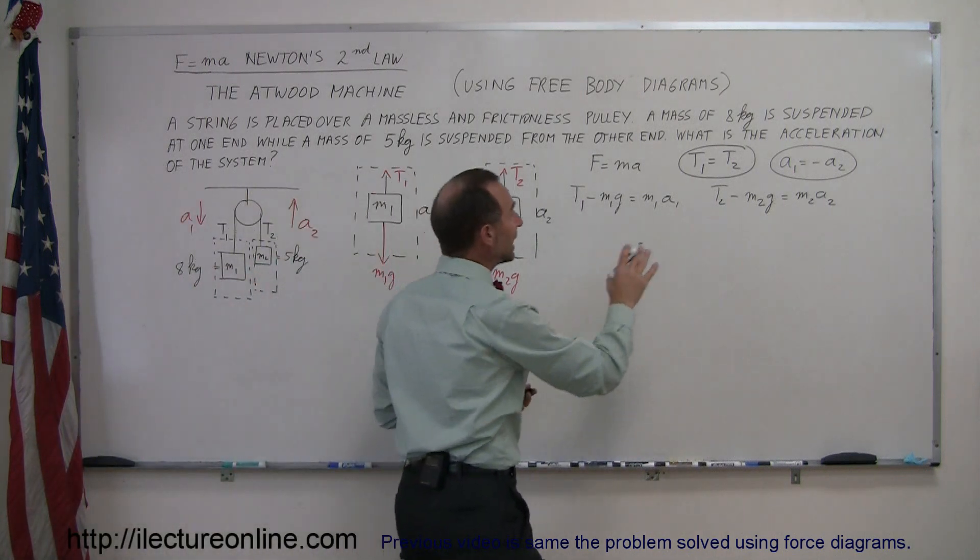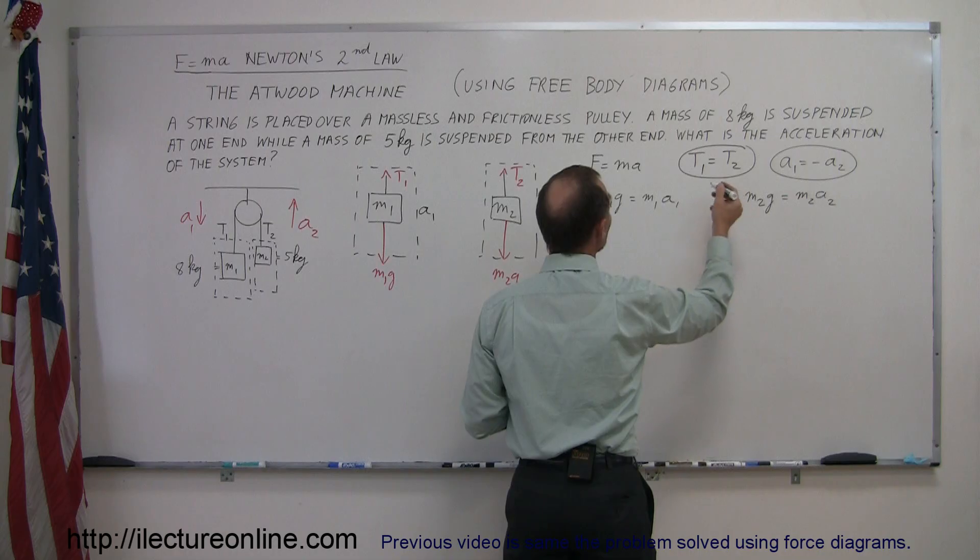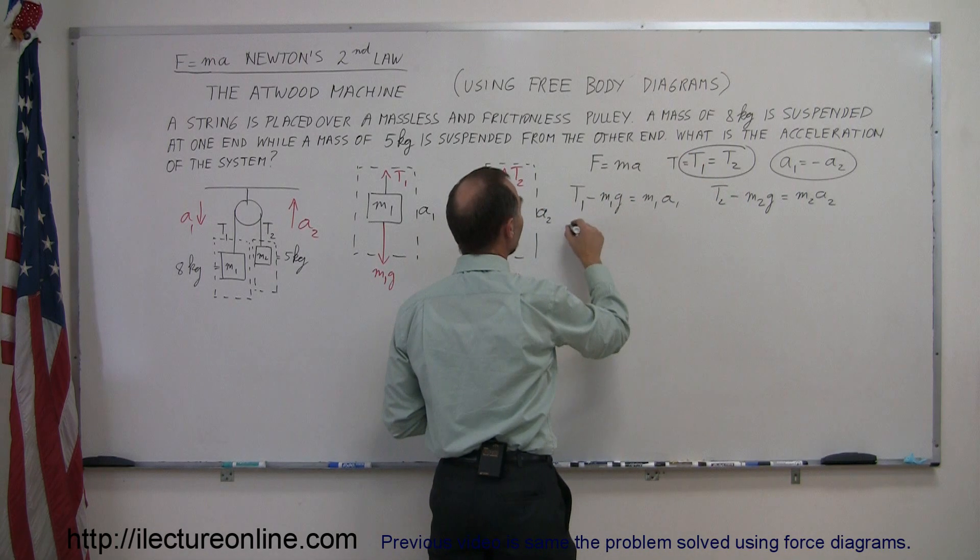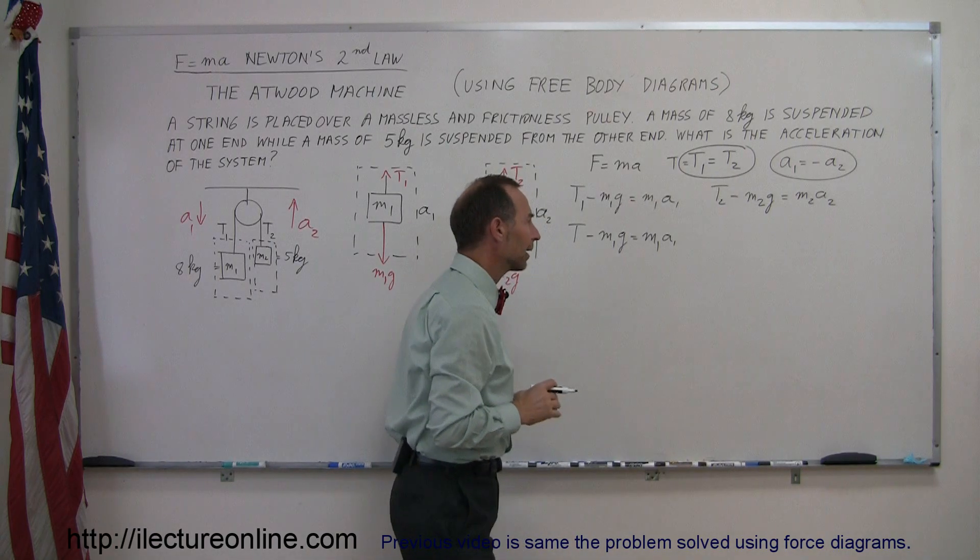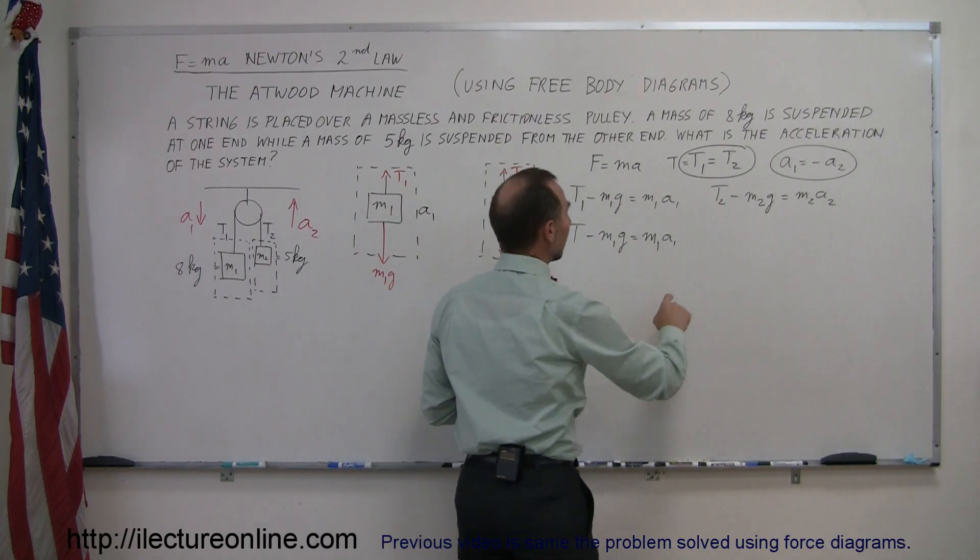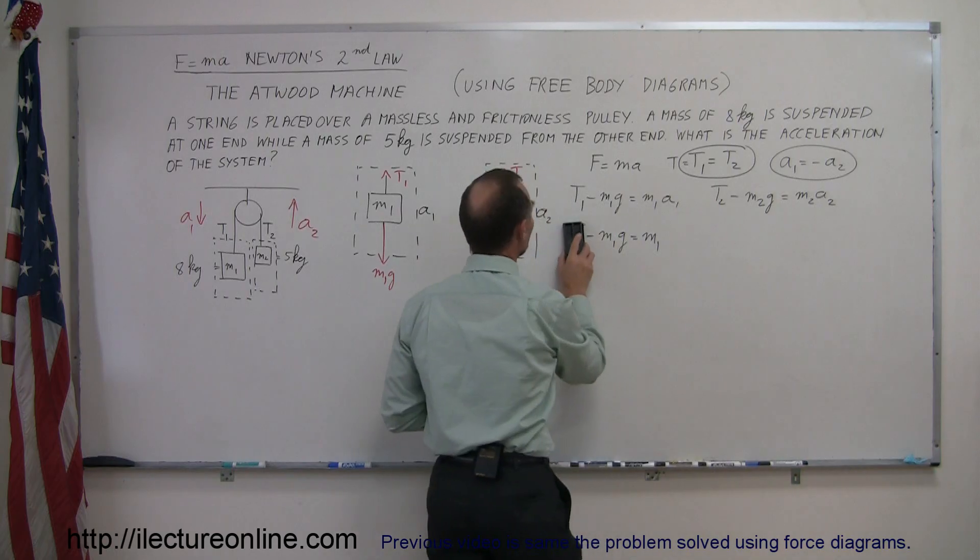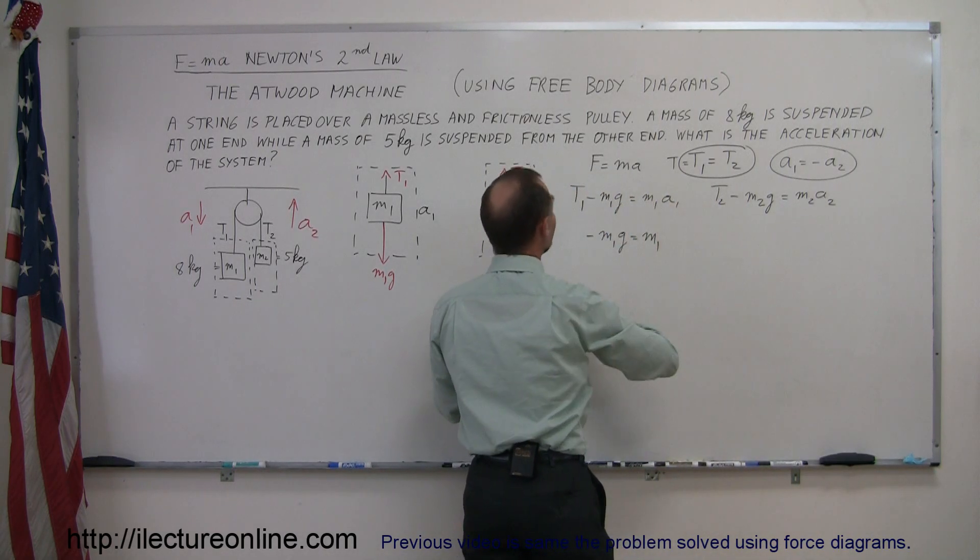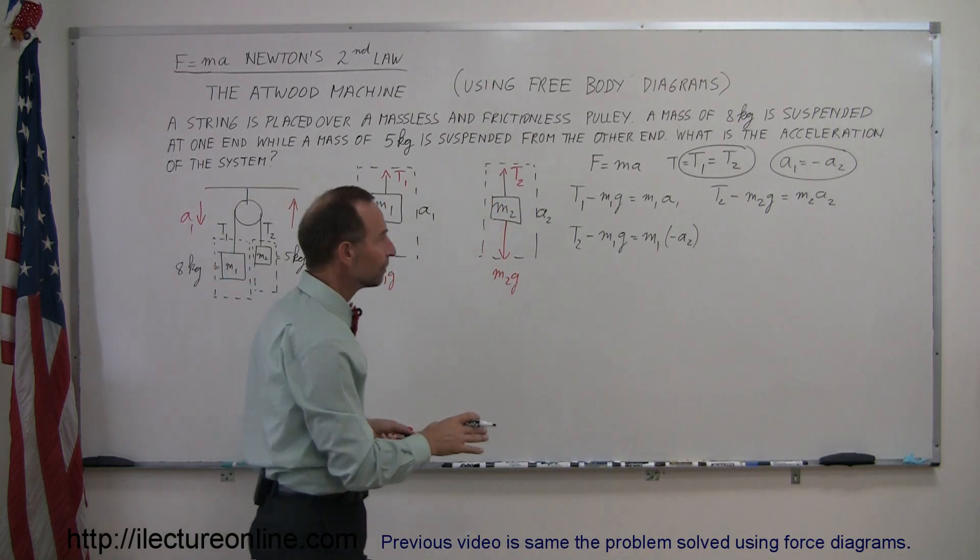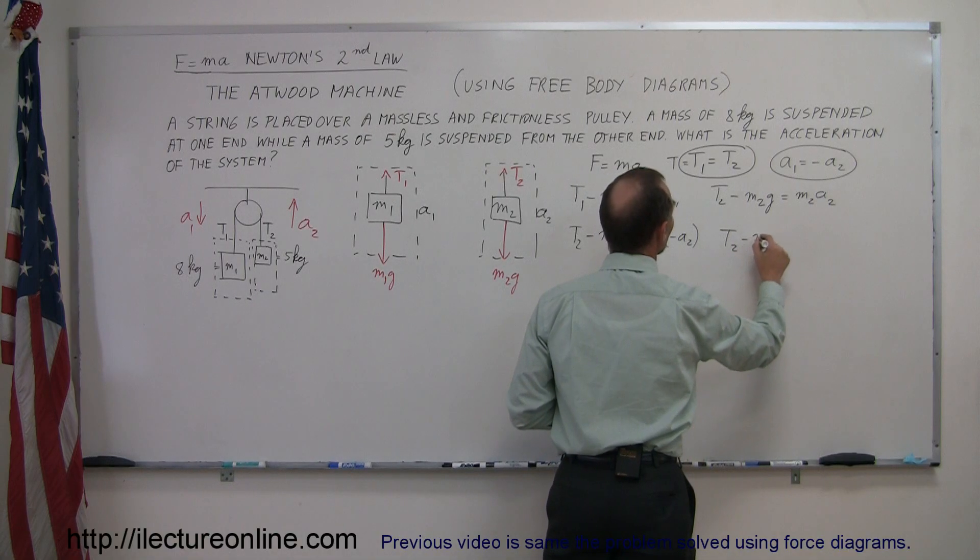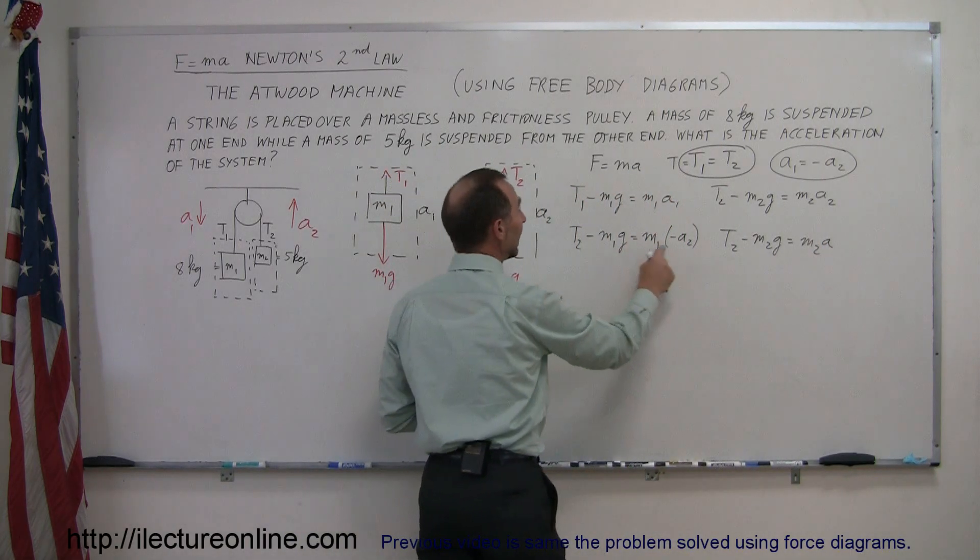That allows us to now substitute in for these variables. Since T1 equals T2, they must equal T. We call this T minus M1G equals M1A1. Since A1 is the negative of A2, I can replace A1 by negative A2. We could replace the T1 by T2. We call this T2 and call the A1 the negative A2. On the right side, we have T2 minus M2G equals M2A2. Now we have two equations and only two unknowns, T2 and A2, and we can solve those simultaneously.